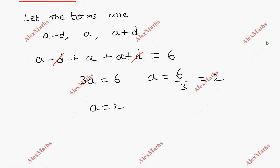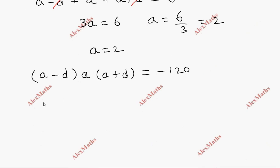Now for the product, which is -120. The product is (a-d) times a times (a+d) equals -120. Substituting a equals 2, we get (2-d) times 2 times (2+d) equals -120.